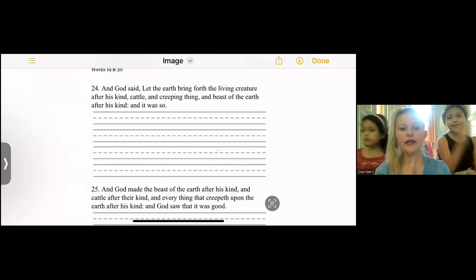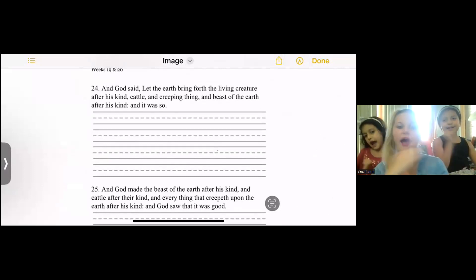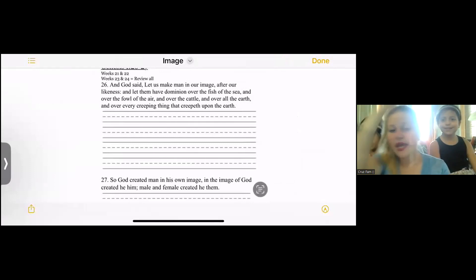And God said, Let the earth bring forth the living creatures after his kind, cattle and creeping things and beasts of the earth after his kind, and it was so. And God made the beast of the earth after his kind, and cattle after their kind, and everything that creepeth upon the earth after his kind, and God saw that it was good.